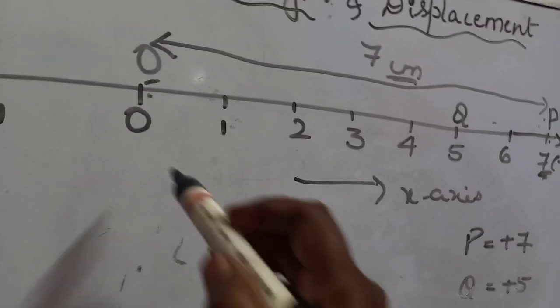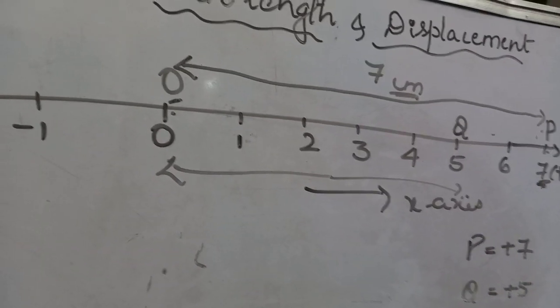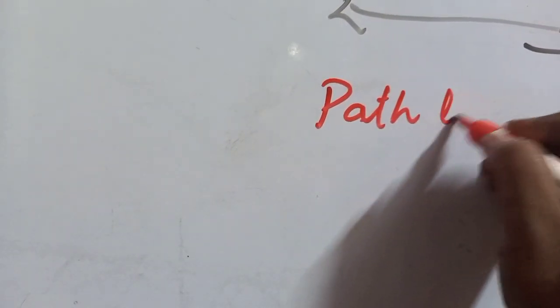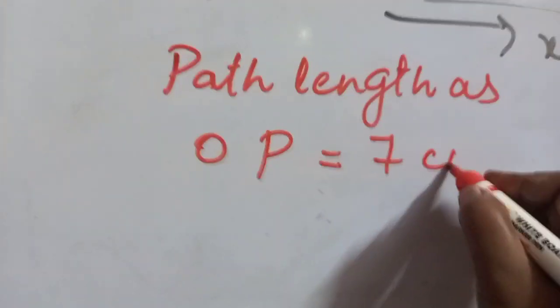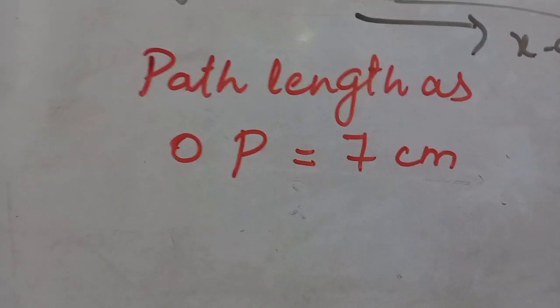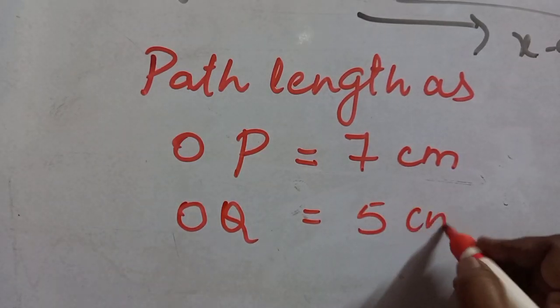The path length OQ, measured from O, is 5 centimeters. So I can write: path length OP = 7 cm (or meters, depending on the scale), and path length OQ = 5 cm or meters.